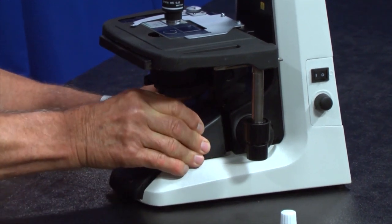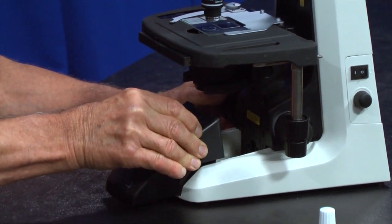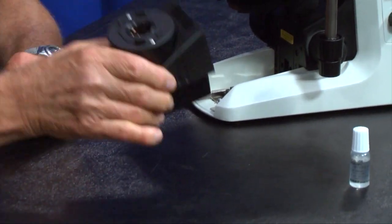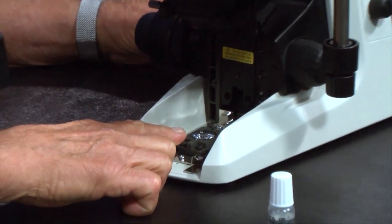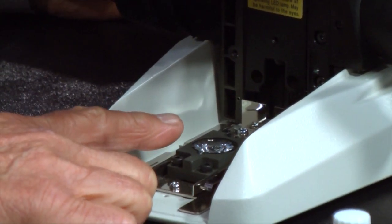Nowadays, most of the microscopes being sold use LED bulbs, which is not actually a bulb. It's a light emitting diode, a little circuit that takes the place of the bulb.